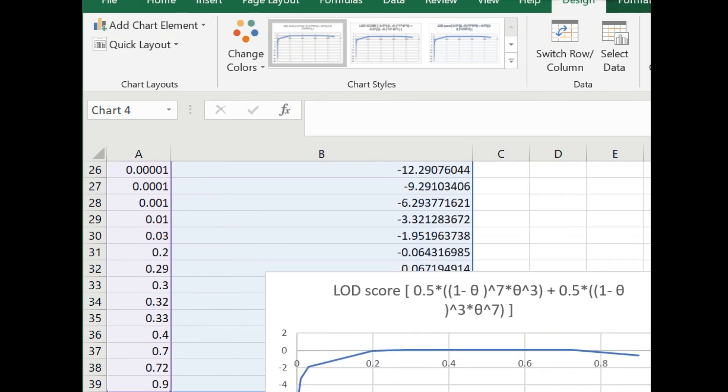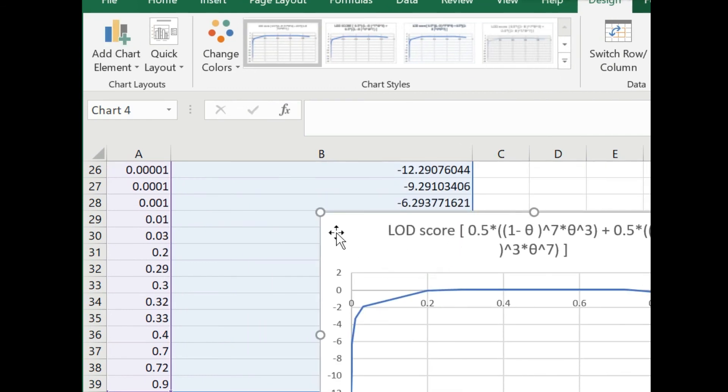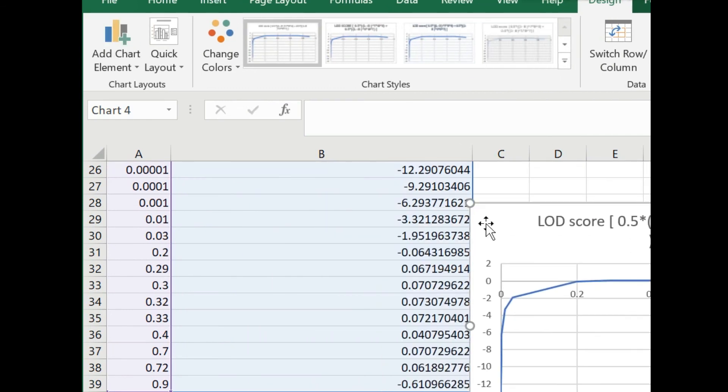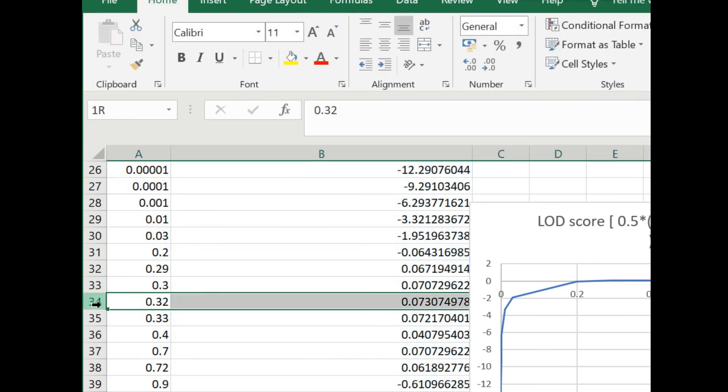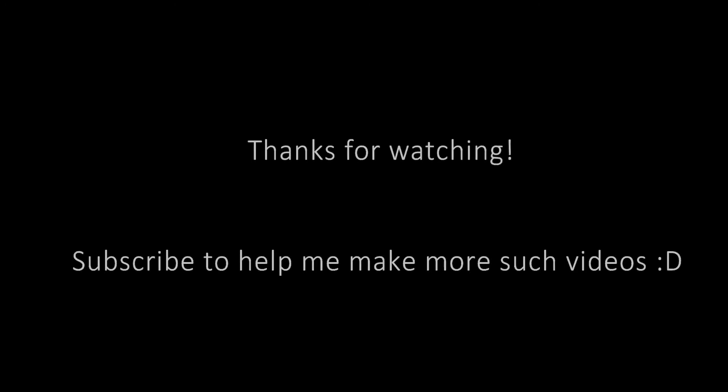Again, a similar comment can be made that we may need more pedigrees or families to improve the LOD score so that it goes above a threshold of three and be considered significant. So this is how we can calculate the linkage disequilibrium score, or the LOD score, and the recombination fraction theta. Thanks for watching.